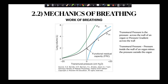This graph is the static compliance curve, with transmural pressure on the x-axis. Transmural pressure is the pressure across the wall of an organ — the pressure gradient across the wall. You will see different labels on the x-axis: transmural pressure, pressure gradient, intrapleural pressure, transpleural pressure, alveolar pressure, and mouth pressure. They are essentially the same thing, describing the change in pressure. The more correct term is transmural pressure, calculated as the pressure inside the wall of an organ minus the pressure outside the wall.